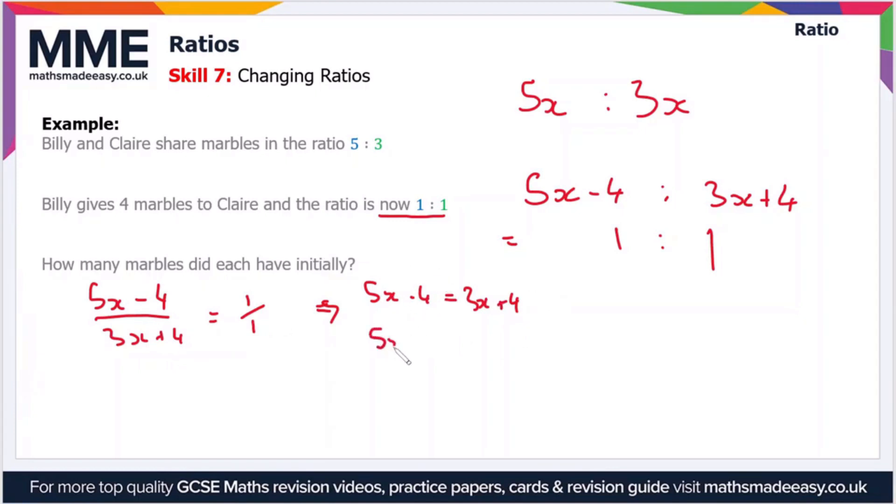So if we add 4 to both sides then we get that 5x equals 3x plus 8. Now if we minus the 3x we get 2x equals 8 and divide both sides by 2 we get that x equals 4.